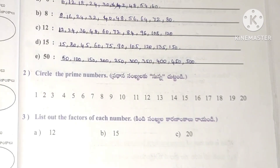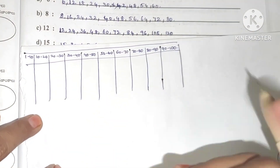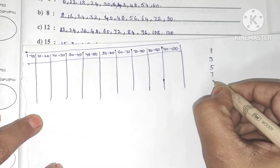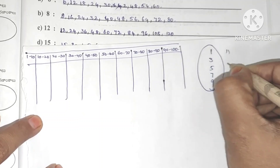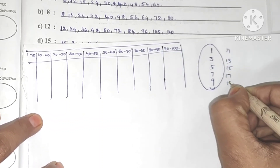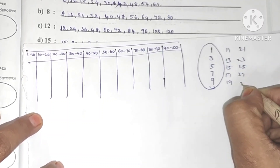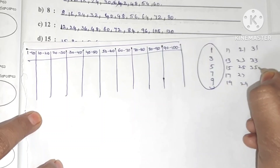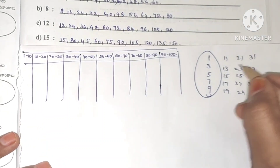Prime numbers are odd numbers. Odd numbers include 1, 3, 5, 7, 9 in the units place. For example: 11, 13, 15, 17, 19, 21, 23, 25, 27, 29. We need to check which of these are prime numbers.